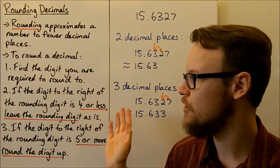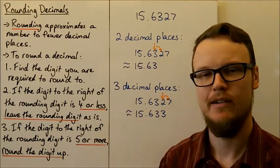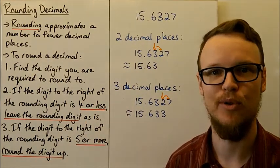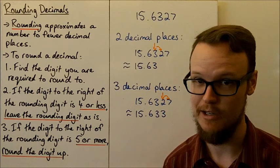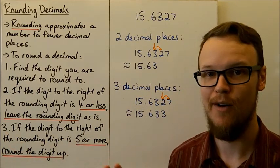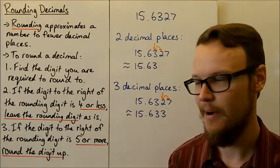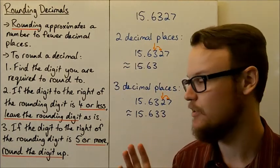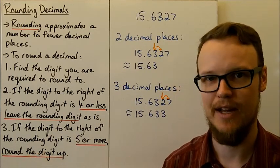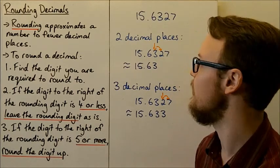Then if the digit to the right of the rounding digit is 4 or less, leave the rounding digit as is and just remove all of the digits after the one that you're looking at. If the digit to the right of the rounding digit is 5 or more, you need to round that digit up because it's closer to the number above, and then remove all of the other numbers coming after that rounding digit.